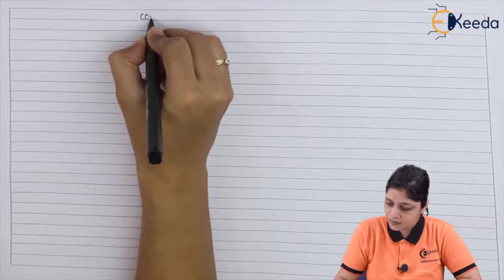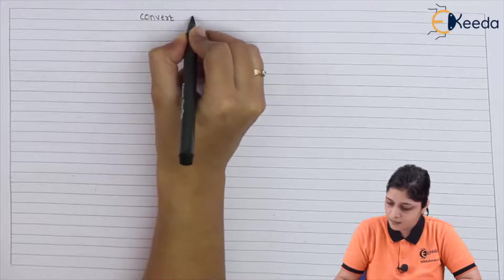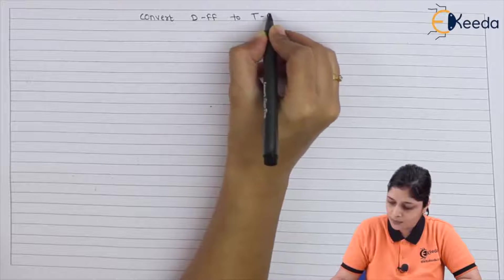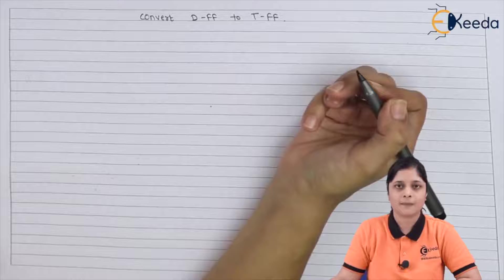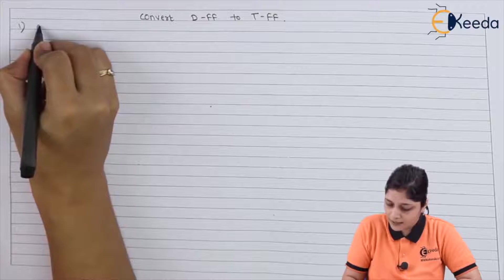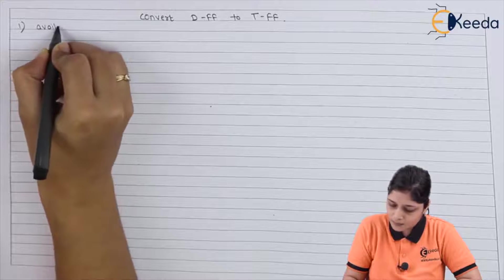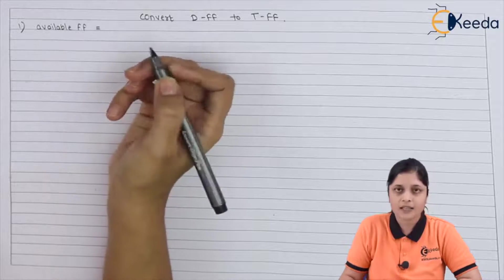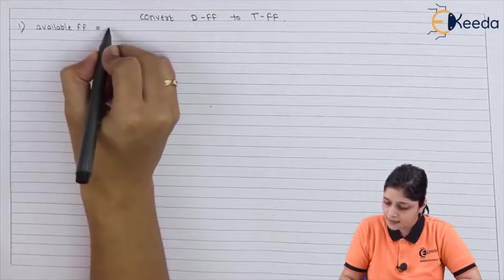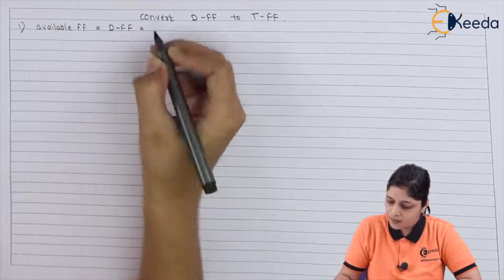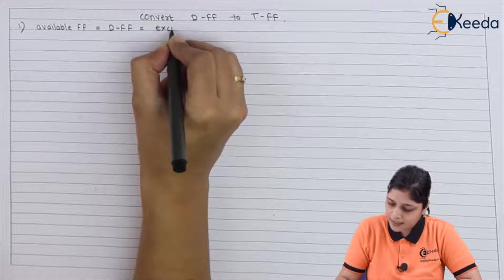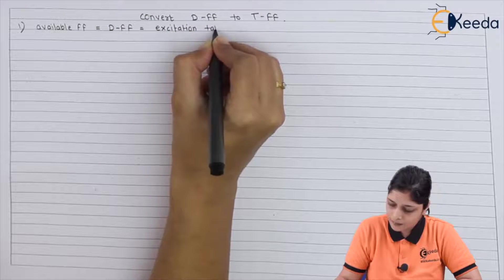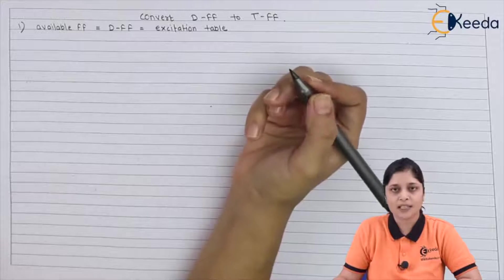Your aim is to convert D flip-flop to T flip-flop. The first step is to write the available flip-flop. Here, the available flip-flop is D flip-flop. We will write the excitation table for D flip-flop.